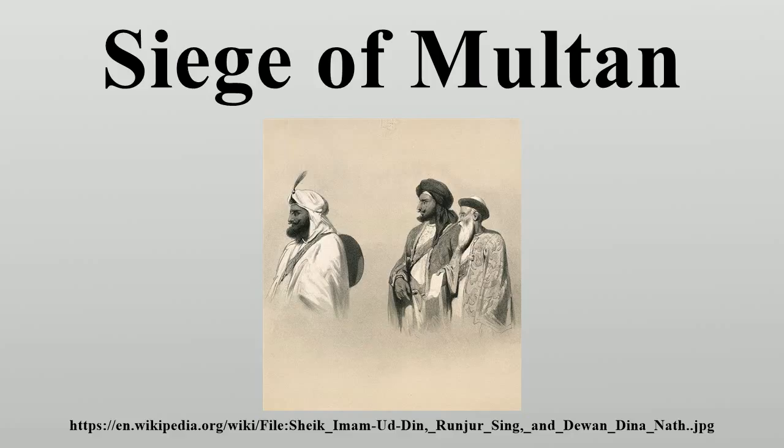In August 1849, the Indus and Chenab rivers overflowed, and the heavily damaged citadel was washed away, eventually resembling an island of mud amidst the floods.